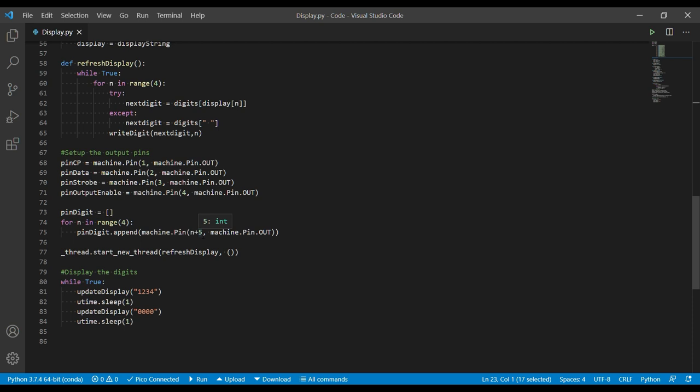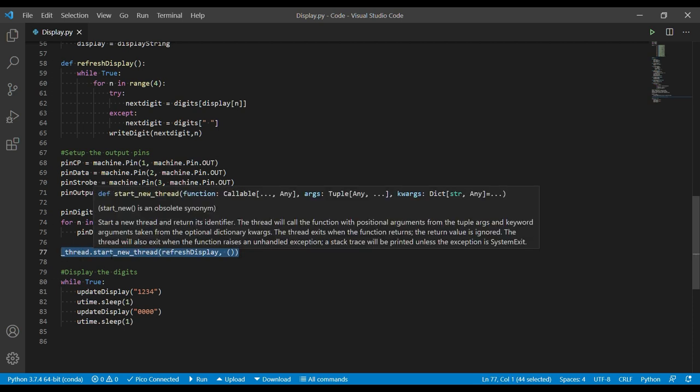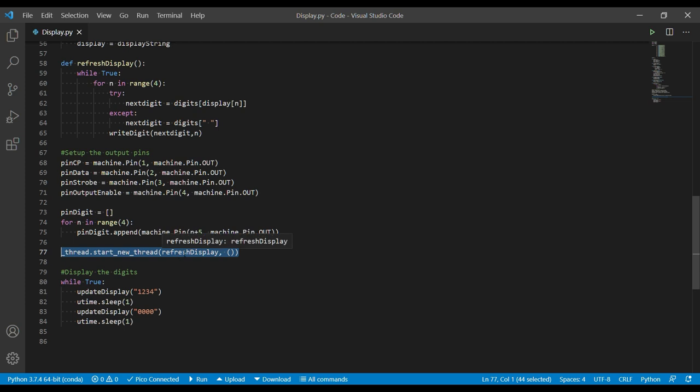So I mentioned we're going to come back to refresh display. And here it is. So we do thread.start_new_thread and tell that thread to call refresh display. So on the Raspberry Pi Pico, when you start a new thread, what it does is it switches to the second core of the device and it will run the code on that core by itself. So let's come back to what refresh is doing.